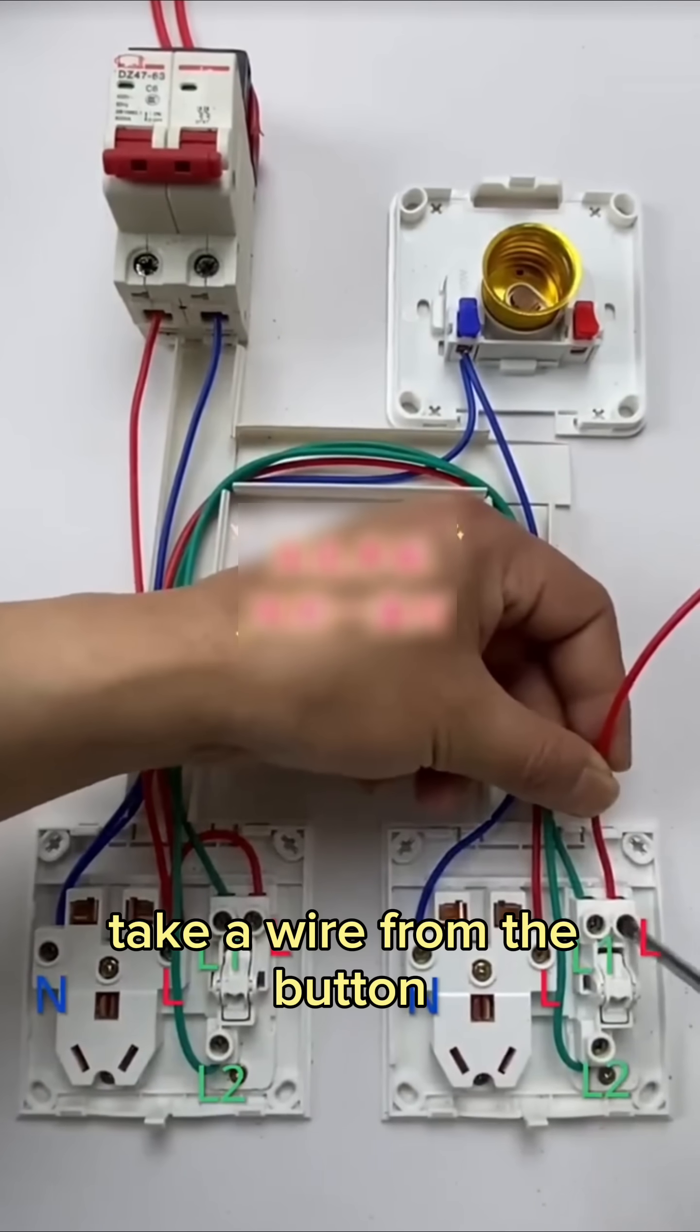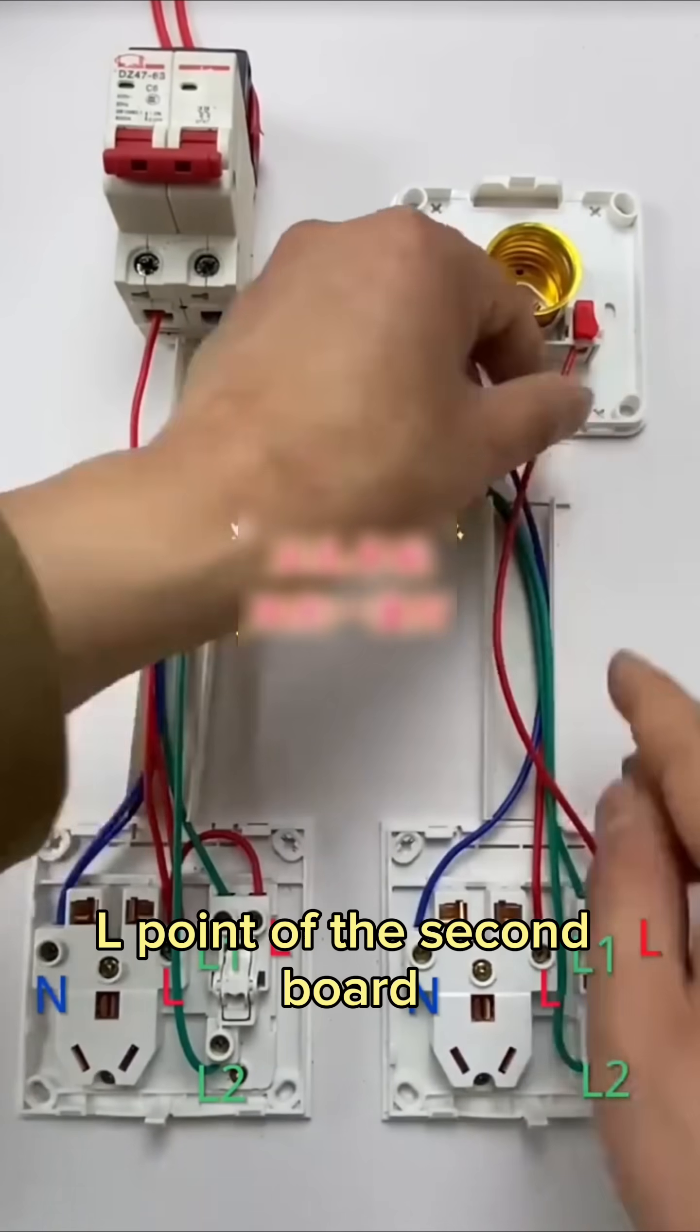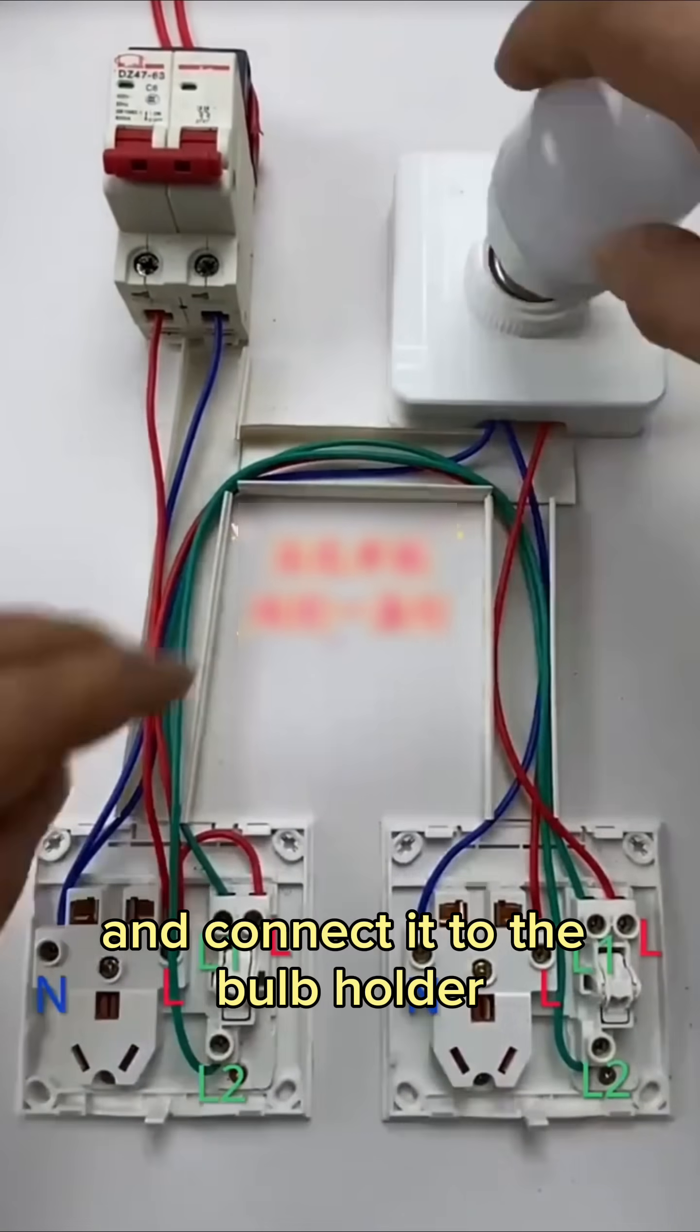Finally, take a wire from the bottom L point of the second board and connect it to the bulb holder.